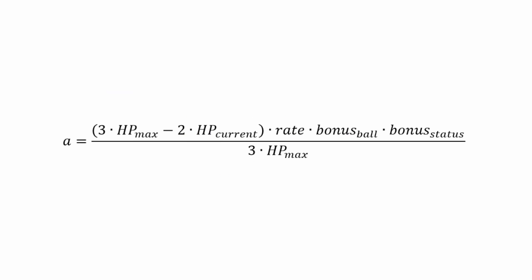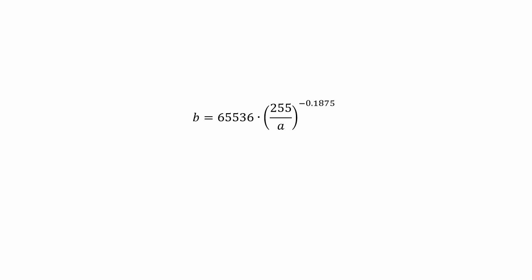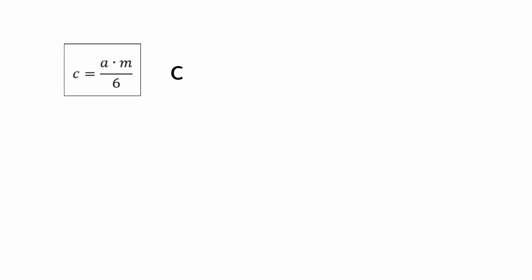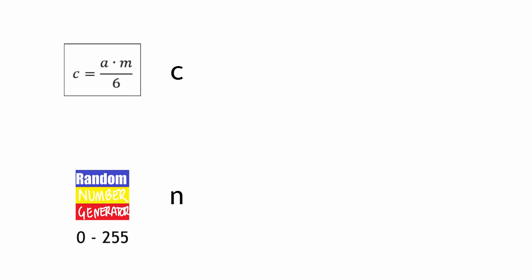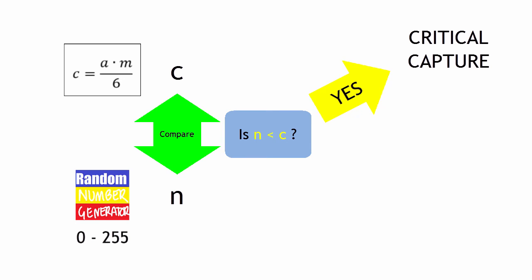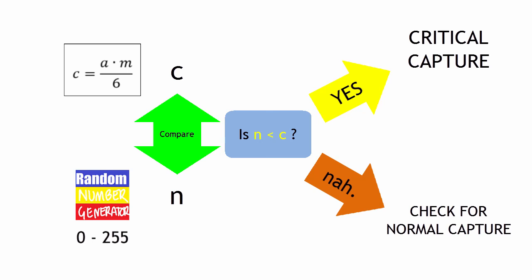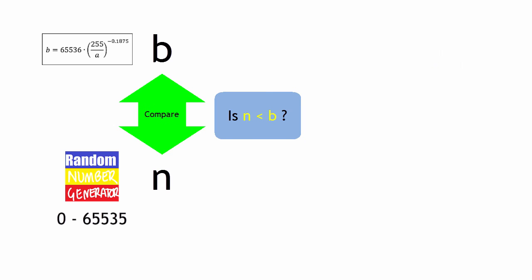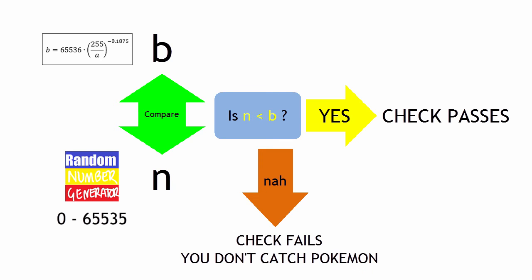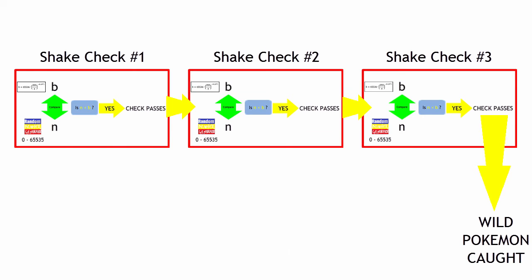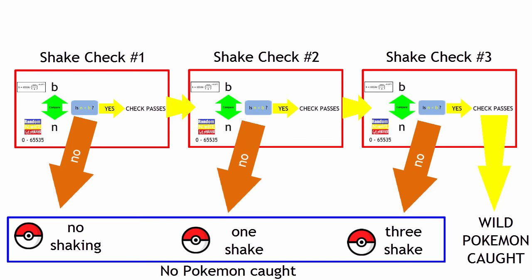In conclusion, you have to find the modified catch rate A, which depends on many different factors. Using that, you find the shake probability B and the critical capture probability C. Using C with a randomly generated number, you perform a critical capture check. If you pass, a critical capture is performed. If you fail, you test for a normal capture — which depends on whether you pass three shake checks using a randomly generated number compared against B. Pass all three and you catch the wild Pokemon; fail one and you don't.